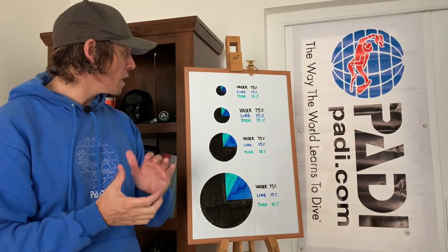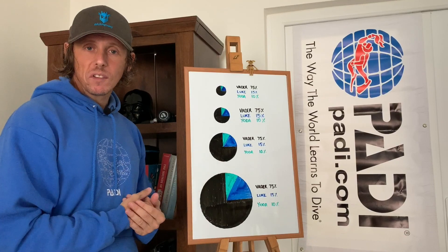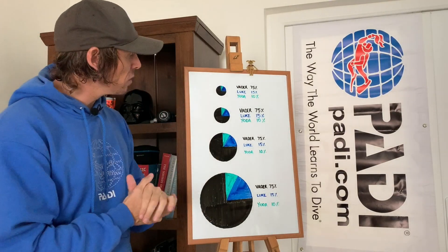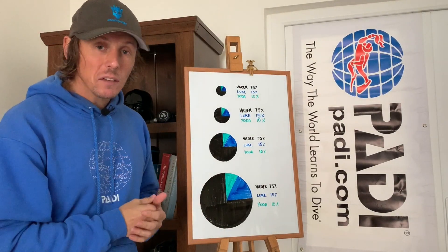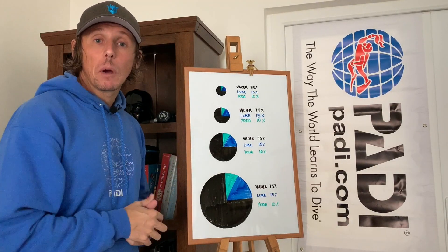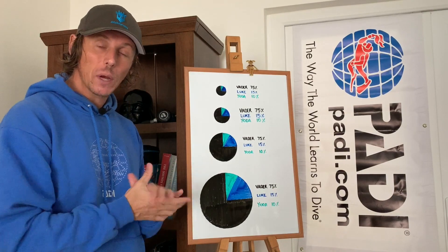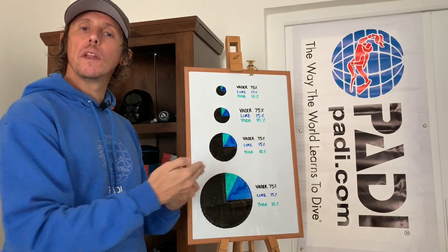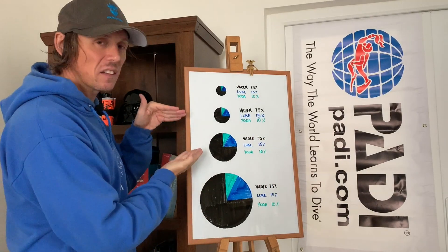Let's kick things off with this diagram right here. Like I said, we're just going to use the original Star Wars movies as an example. I've given a visual representation so you can see the numbers and three main characters and their significance, in my eyes, towards the overall movies.